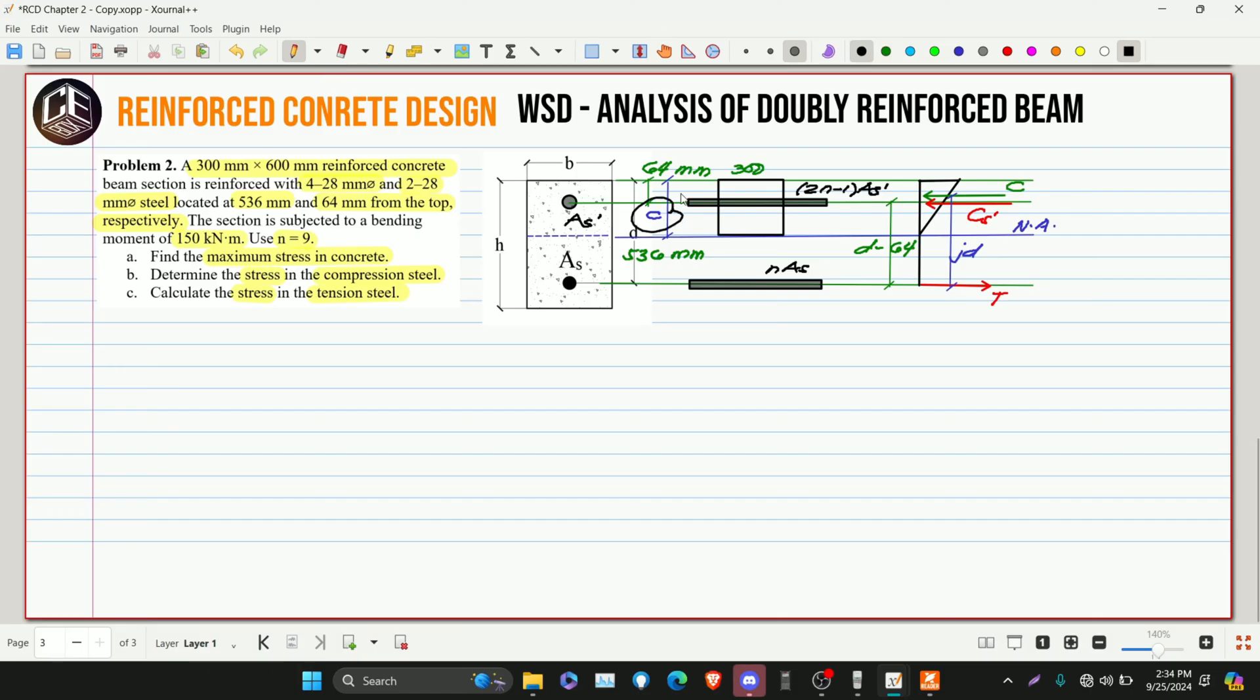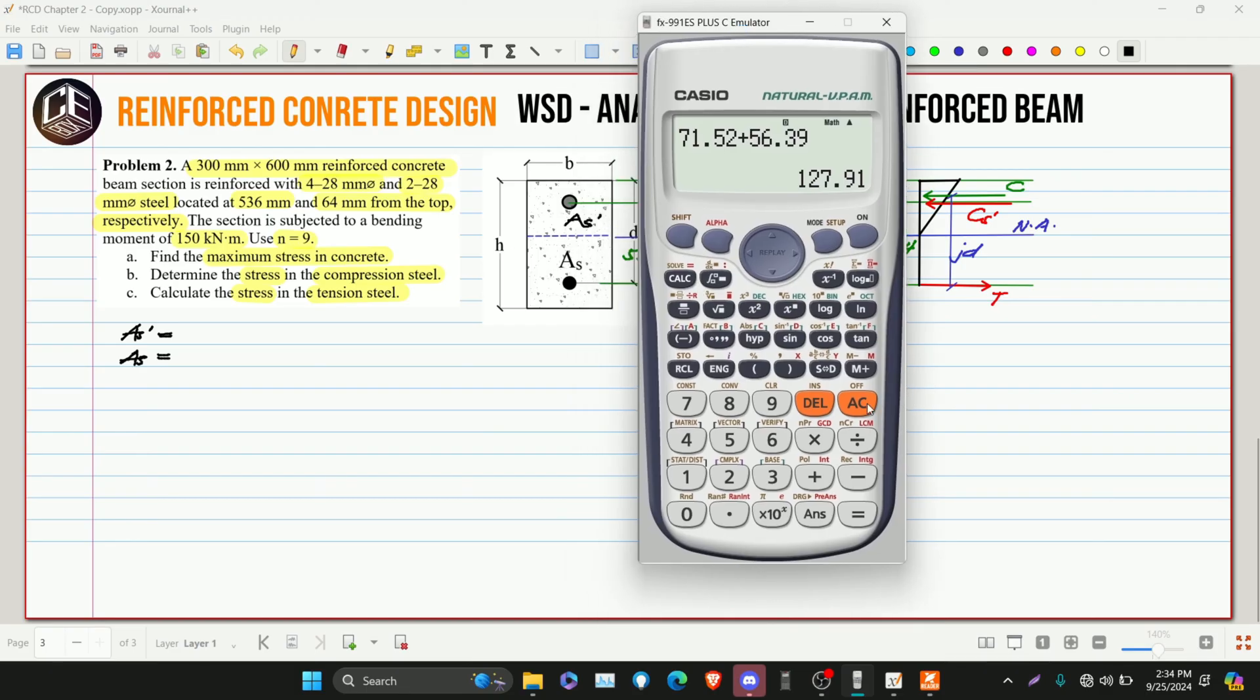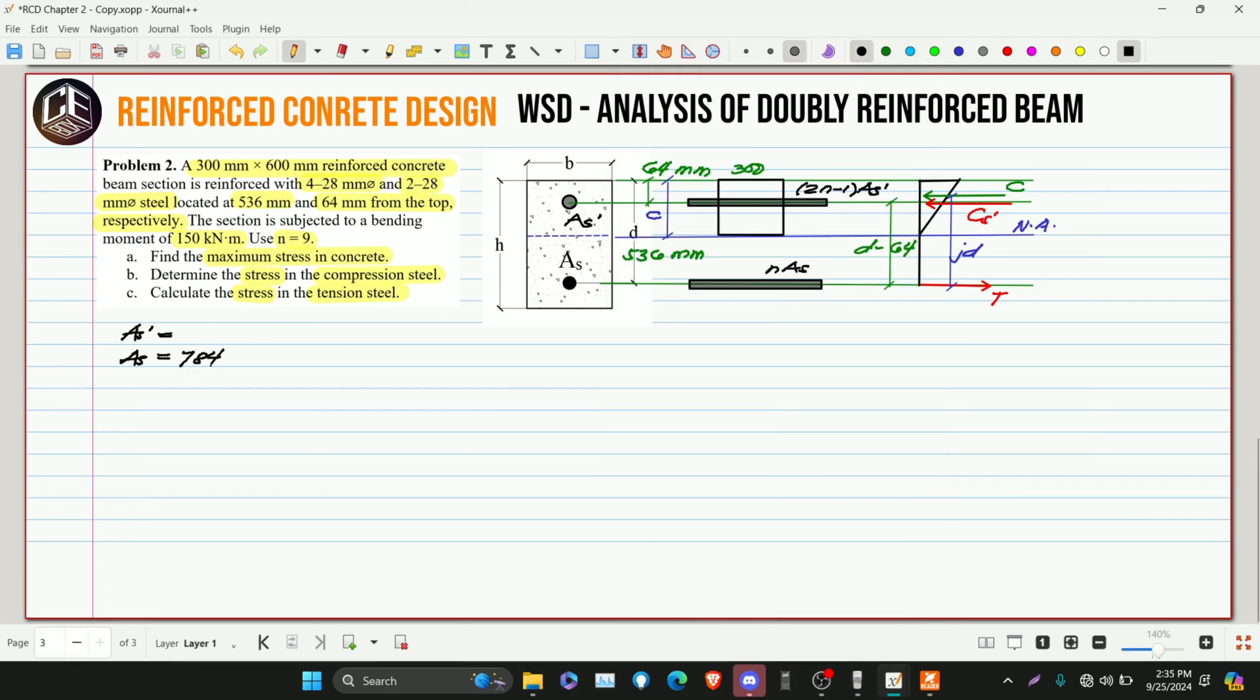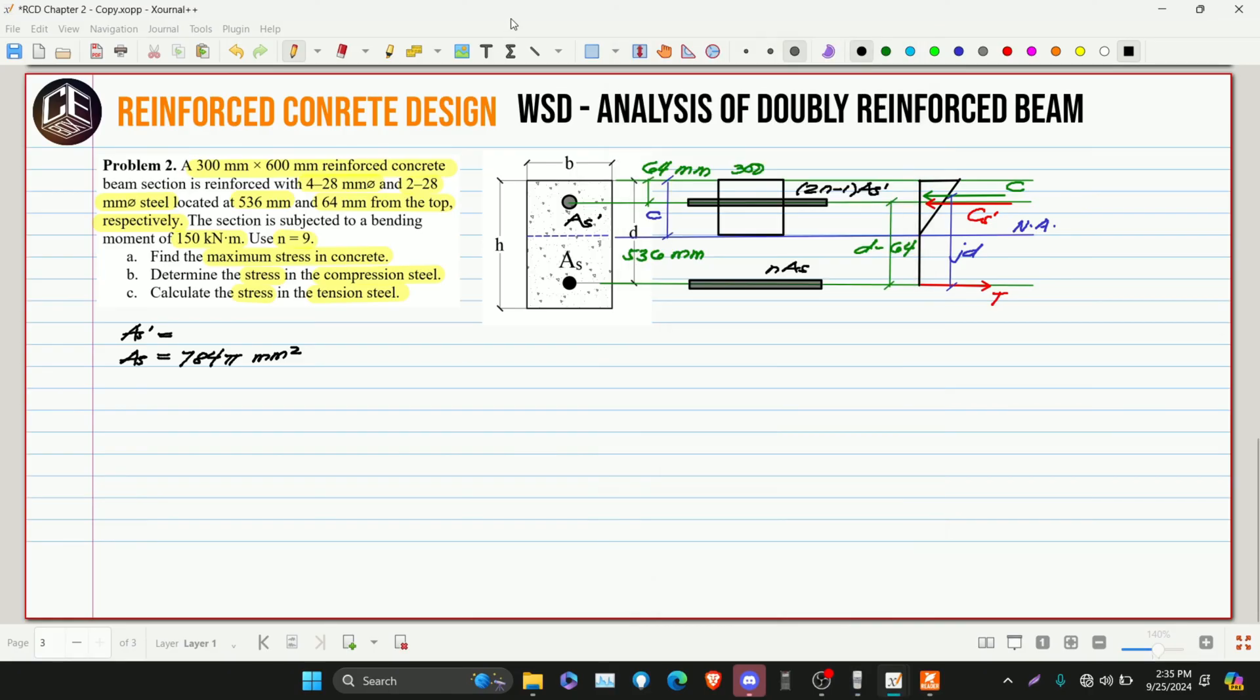So let's solve for C like we did in solving problem number one. M top and M bottom. But before that, let's solve for AS prime and AS. So, both are 28, only the number differs. This is 28 squared over 4 multiplied by 4. So this is 784π millimeter squared. This one, times 2, that's half of it. So 392π millimeter squared.